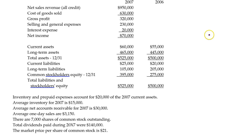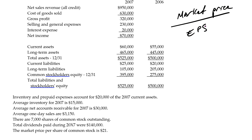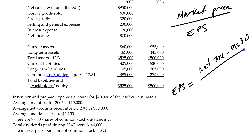The PE ratio formula is the market price of the stock divided by the earnings per share. In this problem we're going to have to calculate earnings per share, but in real life earnings per share is given to you — it's like the only ratio that's given in the financial statements. Earnings per share is net income minus preferred stock dividends (this company doesn't have any preferred stock), divided by the number of shares outstanding.